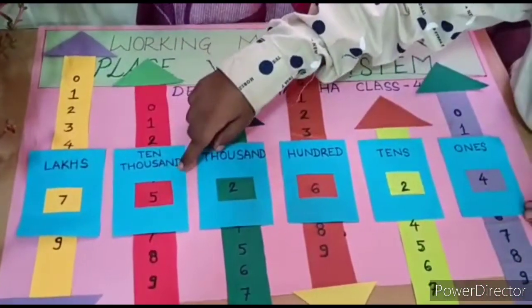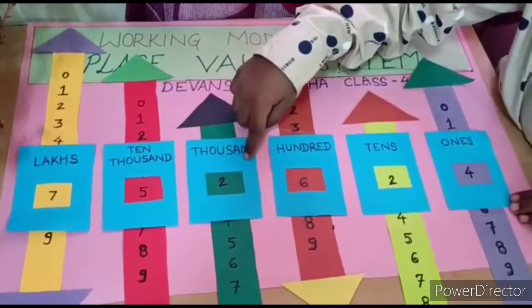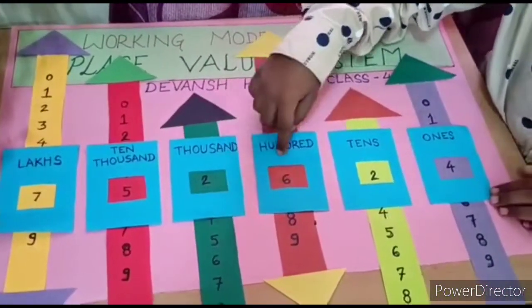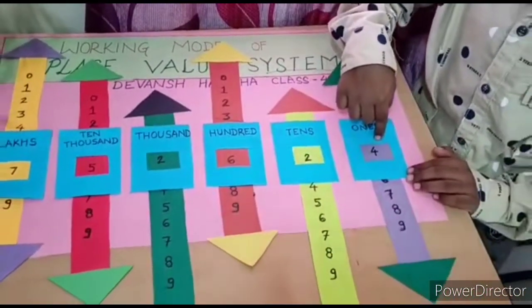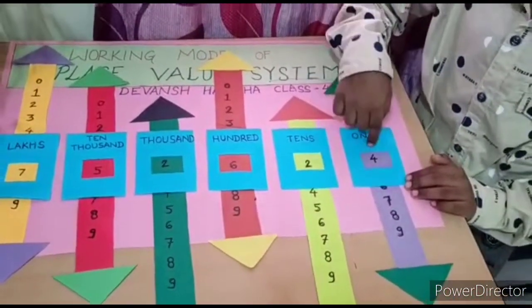So the full number is: fifty, two thousand, six hundred, twenty-four. Thank you friends and teachers. Bye bye bye.